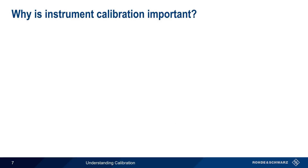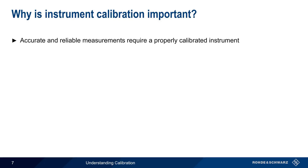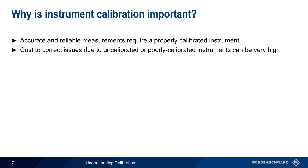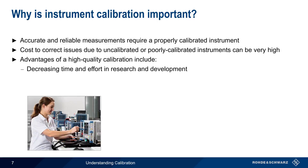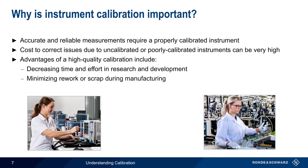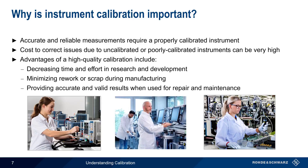Instrument calibration is necessary because accurate and reliable measurement results require instruments that are properly calibrated. This is particularly important because the costs of correcting issues due to uncalibrated or poorly calibrated instruments can be very high. Good measurements decrease the amount of time and effort required for research and development, but they also minimize the amount of rework and scrap during manufacturing or production. Proper calibration is also vital for instruments used in repair or maintenance activities, and a valid calibration helps to reduce overall measurement uncertainty.